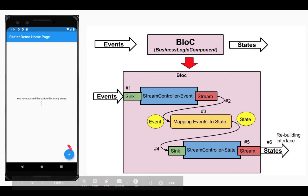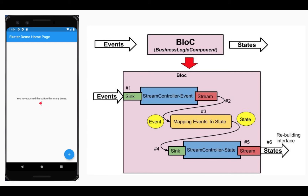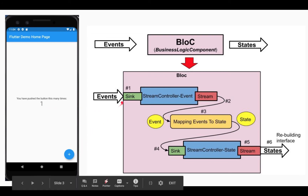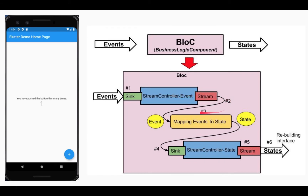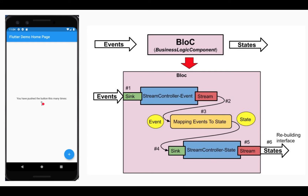Everything happening on the interface is an event, and what comes out is a state. Here the state is just an integer representing the counter value. The event goes into the sink, gets mapped to a new state — from zero to one — which is sent to the state stream sink, delivered back, and rebuilds the counter display to show one.